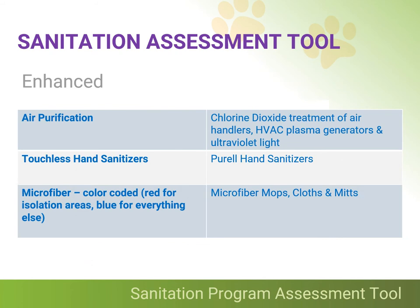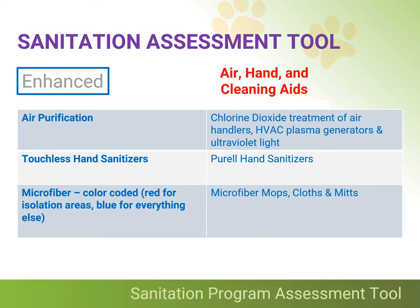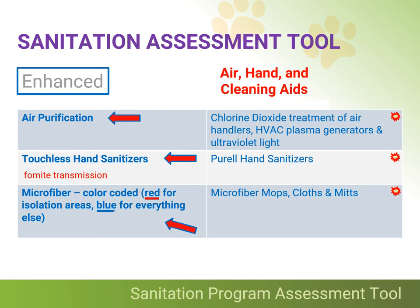To take your sanitation capabilities to the next level — an enhanced sanitation level program — you need to begin thinking about adding air, hand, and cleaning aids. Because some microorganisms are airborne pathogens, don't overlook treating the air in your facility to enhance its overall quality. Options here might include employing chlorine dioxide treatment of air handlers, HVAC plasma generators, and/or deployment of ultraviolet light systems. Next, be sure to address the obvious: touchless hand sanitizers should be strategically located throughout your entire facility to cut down on person-to-animal fomite transmission of microorganisms. And then there's microfiber — by making use of color-coded microfiber mops, cloths, and mitts: red for isolation areas, and blue for everything else.